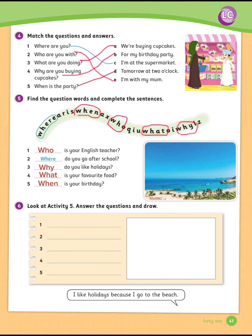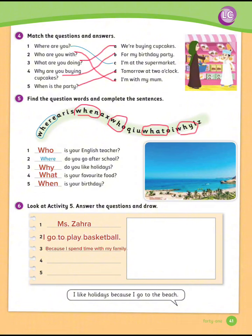Exercise number 6: Look at Activity 5, answer the questions and draw. There is no correct or wrong answer in this exercise. I'll show you my answers as an example. Who is your English teacher? Miss Zahra. Where do you go after school? I go to play basketball. Why do you like holidays? Because I spend time with my family. What is your favorite food? My favorite food is sushi.